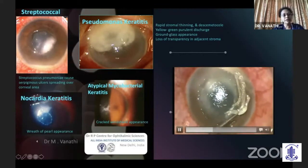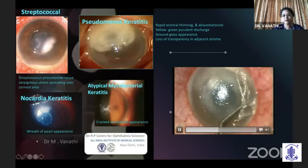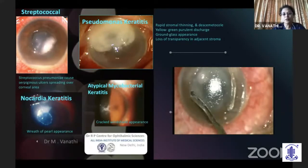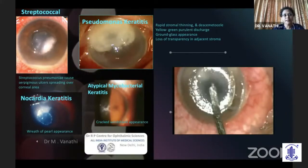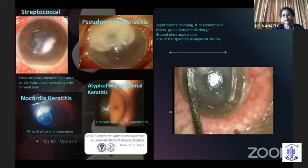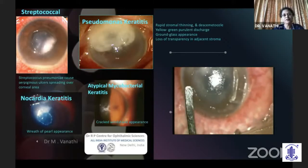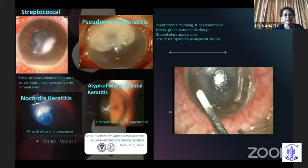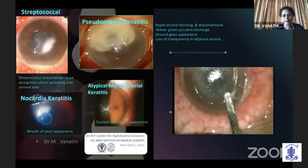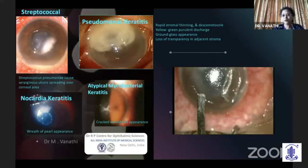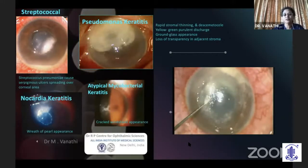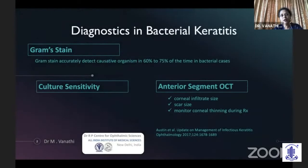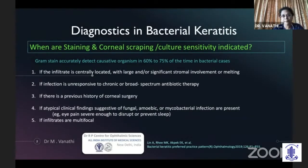For corneal scraping, in post-refractive surgery cases you need to do a flap lift. Traditionally a Kimura spatula is described, but you can use a 26-gauge or 30-gauge needle to scrape from the region of the infiltrate. Remember to remove and discard the necrotic material — sending necrotic material will only yield pus cells and no microbial organisms. Scrape from the region of the infiltrate, use separate needles when plating onto different plates for smears and culture, and direct inoculation is very helpful. If culture positivity cannot be achieved, a suture driven through the depth of the infiltrate can be sent for culture, or corneal biopsies can be used.